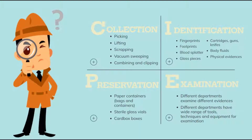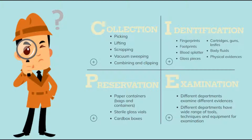Collection refers to the methods of collecting evidence at a crime scene. When investigators find any evidence, they collect it and send it to the laboratory for further testing. Before collection, investigators wear gloves so that the evidence does not get contaminated. Methods include picking using forceps and tweezers, lifting with tapes for fingerprints, hair, and dust, scraping dried fluids using scrapers, and vacuum sweeping dust or powder particles.